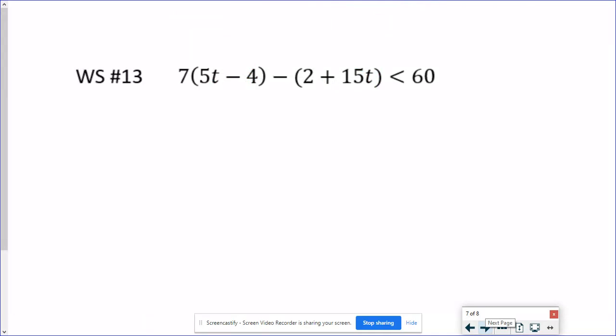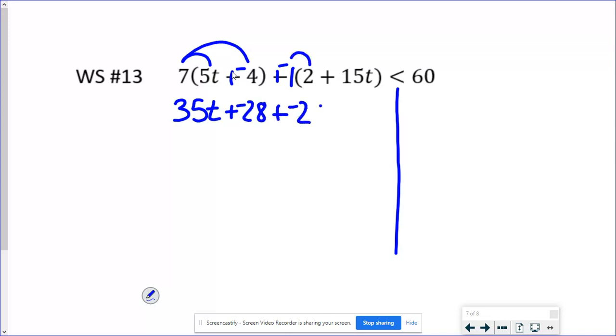One more problem. For number 13, again, I have subtractions in here that concern me. This one I can just do a keep, change, change. But this is really a 1 and then I'm going to make it a negative 1 that's going to distribute. So I have 35t plus negative 28 plus negative 2 plus a negative 15t is less than 60. So again, all my variables are on one side this time. When I combine all of my t's, 35 and negative 15 would give me 20t. Negative 28 and negative 2 would be a negative 30.